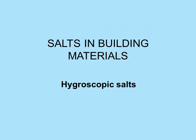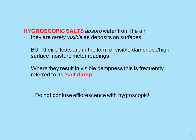The other group of salts in building materials are hygroscopic salts. Hygroscopic salts absorb water from the air, but they are rarely visible as deposits on surfaces. However, their effects appear as visible dampness and high surface moisture meter readings — this is frequently referred to as salt damp. Do not confuse efflorescence with hygroscopic salts. Reports have stated that hygroscopic salts were visible all over the surface — they weren't; they were efflorescent.